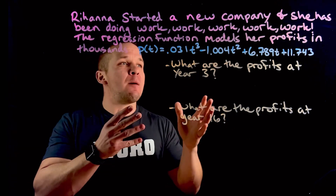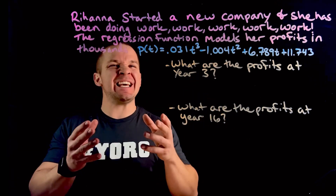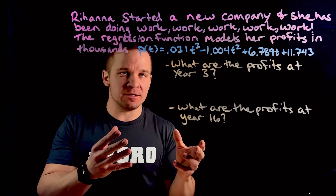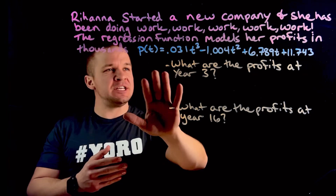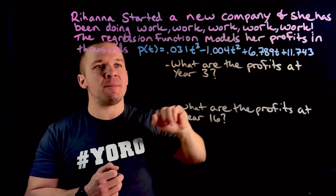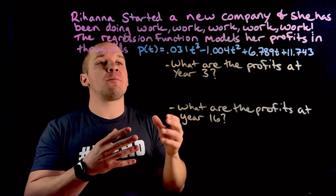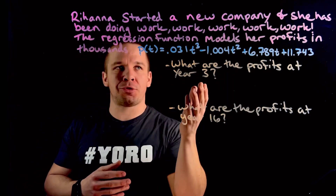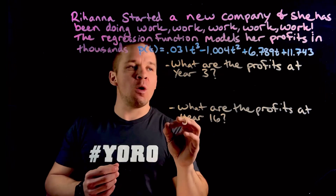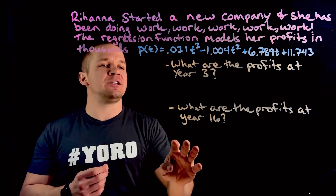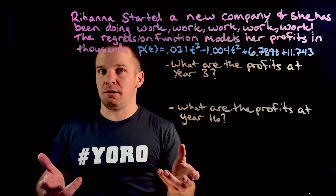The regression function models the profits in thousands. We got P of T equals that mess right there. Now we want to know: what are the profits at year three and what are the profits at year 16?